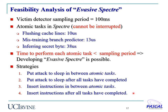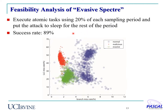The inserted instructions counteract the attack's microarchitecture signature — for example, if the attack increases cache miss rate, we insert instructions that reduce it. To study feasibility, we take a sample attack executing atomic tasks using 20% of the sampling period and then put the attack to sleep for the rest. We achieved an 89% attack success rate. Plotting last-level cache miss rate and branch miss rate, the red and blue distributions show the original Spectre and normal programs with a clear boundary, while the green evasive Spectre overlaps with the blue normal distribution, making detection difficult or impossible.